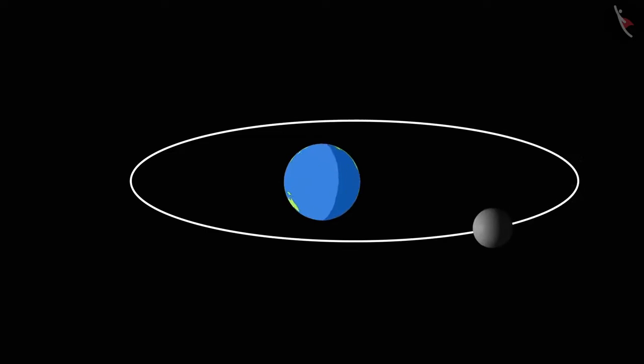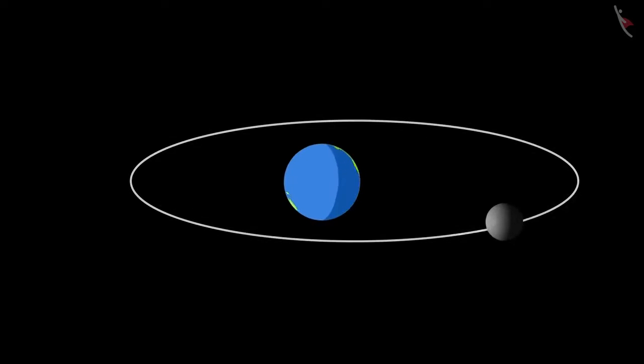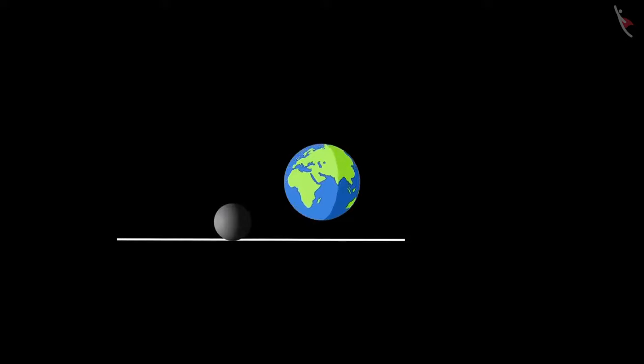One of the examples of centripetal force is the motion of the moon around the earth. The moon orbits around the earth due to the centripetal force provided by the gravitational force of the earth. A lack of centripetal force would put the moon in a uniform straight line motion. Bye bye moon.